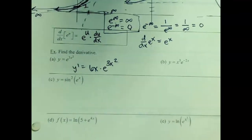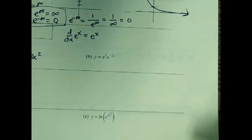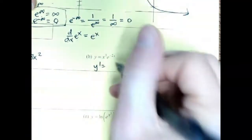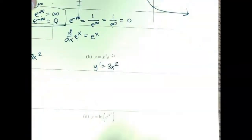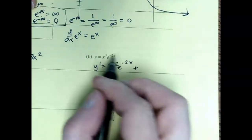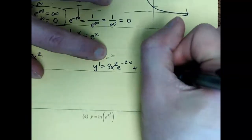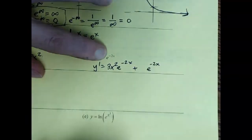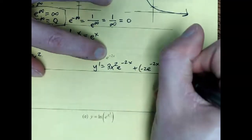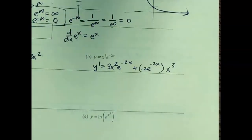Next example: we have a product rule. The derivative of the first times the second, plus the derivative of the second times the first. The derivative of the second is e to the negative 2x, and what kicks out because of chain rule is a negative 2. So there's the derivative of the second times the first. You could simplify it if you want — I'll leave it like that.